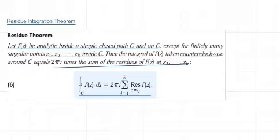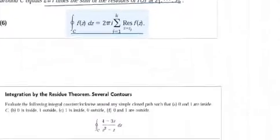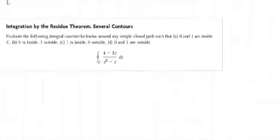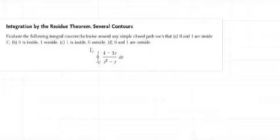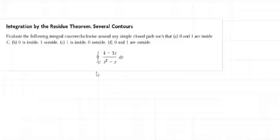Now let's take a problem. Evaluate the following integral counterclockwise around any simple closed path for the cases: both 0 and 1 are inside C; 0 is inside and 1 is outside; 1 is inside and 0 is outside; and 0 and 1 are both outside. The integral is (4 − 3Z) / (Z² − Z) dZ over the curve of integration.